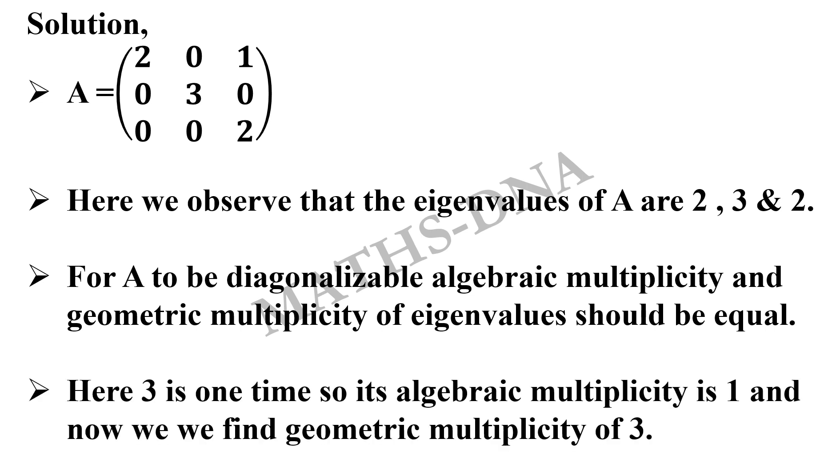So firstly, we will find the algebraic multiplicity. Clearly, we can see that algebraic multiplicity of 3 is 1 because it is not repeated. Now, we will find the geometric multiplicity of 3. How to find the geometric multiplicity of any eigenvalue? First, subtract that eigenvalue multiplied with I from the given matrix, that is A minus 3I.